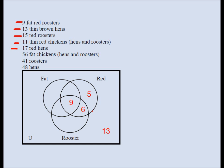Next: 17 red hens. Red means inside the red circle; hens means outside the rooster circle. It doesn't specify fat or thin, so it includes both fat red hens and thin red hens. These two regions together must equal 17. We already have 5 (thin red hens), so fat red hens must be 12, since 5 plus 12 equals 17.